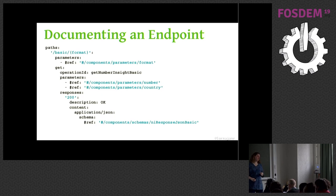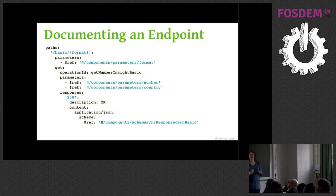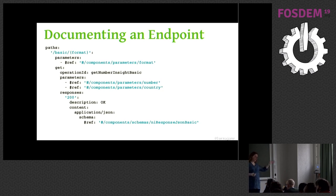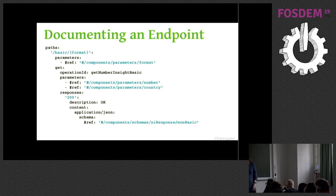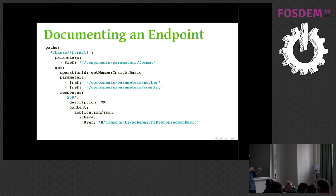Here's a path example — I shrank the font as much as I dared. This is our Number Insight API: you can use Nexmo services to take a number and look up whether it's a valid number, which country it's in. The basic one doesn't give you a lot of detail. We make a call to /basic and then a format parameter. Because that format parameter is in every endpoint — it's going to be JSON or XML — I just refer to it. If for any reason I want to change those, I change it in one place and it appears everywhere.